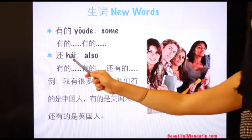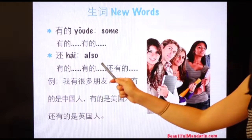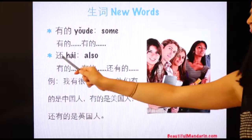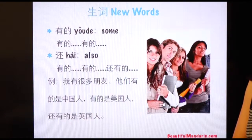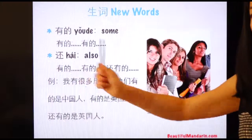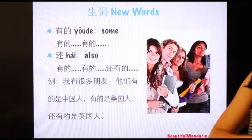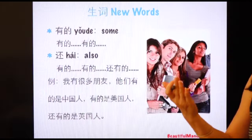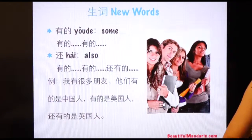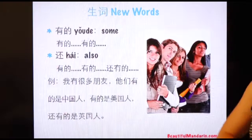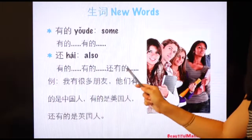Next word: 还, which means 'also' or 'still.' How to use 还? If you want to say 'some people are Chinese, some people are American, also some people are Canadian' — those kinds of sentences — we use 有的...有的...还有的.